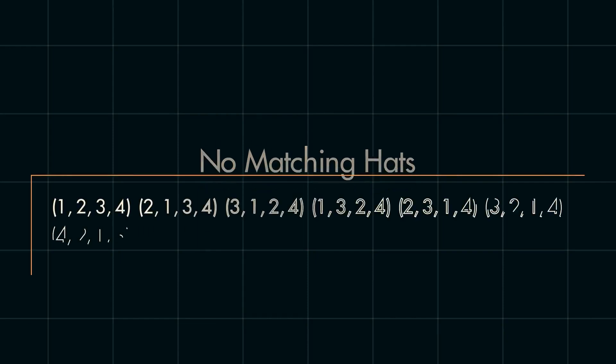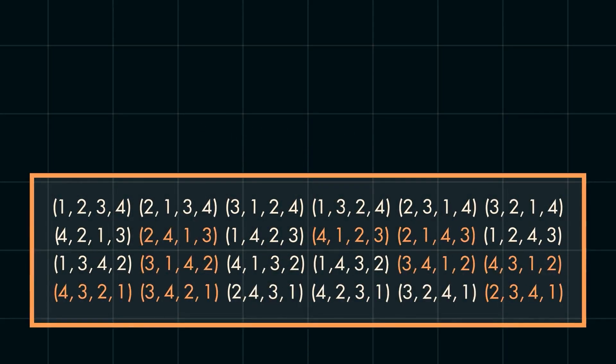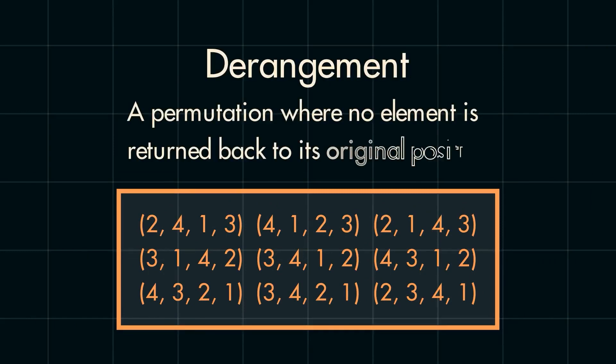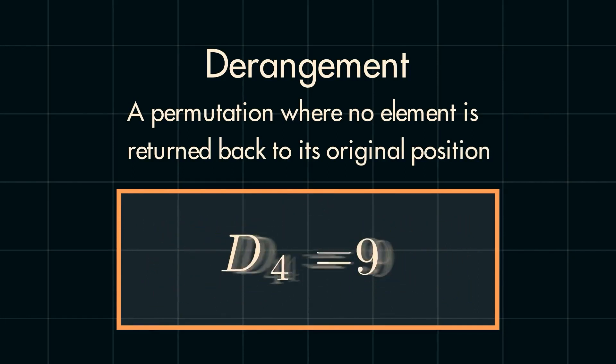With this total number of outcomes found, we now want to find the number of outcomes where none of the hats match to their original owner. Given how few outcomes there are in this specific problem, we can solve this problem by simply writing out every possible outcome and identifying the ones that fit the criteria. Doing this, we can identify nine possibilities where no one receives their own hat back. Each of these possibilities is called a derangement. A permutation, where no element is returned back to its original position. A little notation we can use to denote the number of these is d sub 4, because we are working with four elements, the four hats.